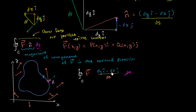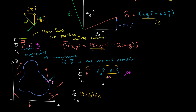We're essentially left with F dotted with that expression. Taking the dot product, you take the product of the x components: P(x,y) times dy. Then plus the product of the j components: Q(x,y) times negative dx, which gives us negative Q(x,y) times dx. So our line integral becomes the integral of P(x,y) dy minus Q(x,y) dx.